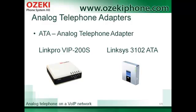It is possible to connect an analog telephone to a VoIP network using an analog telephone adapter. You need to connect the adapter to the analog telephone and to the computer network. After a simple configuration you can use your traditional phone as a VoIP extension, so you will be able to call any other IP phones in the same network. In the pictures you can see a LinkPro and a Linksys adapter. Further tasks of these adapters are to convert the two types of signal between networks.